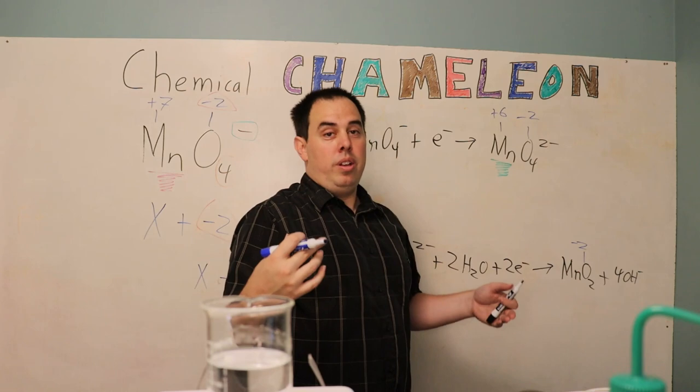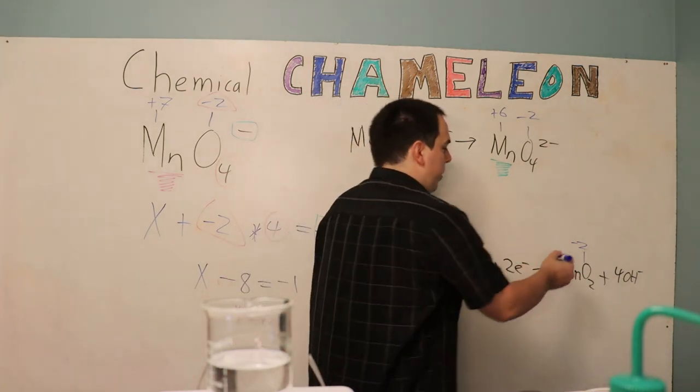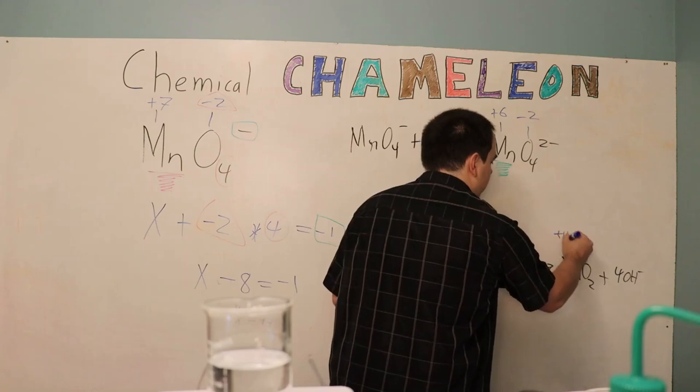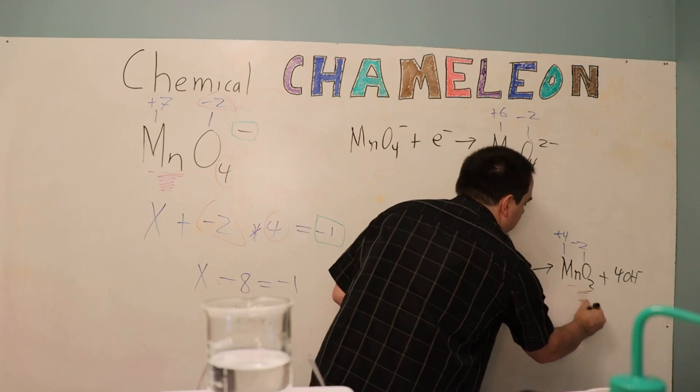So negative 2 times 2 gives us negative 4. The only way to get to 0 is for this to be a positive 4. And this is going to have a brown appearance.